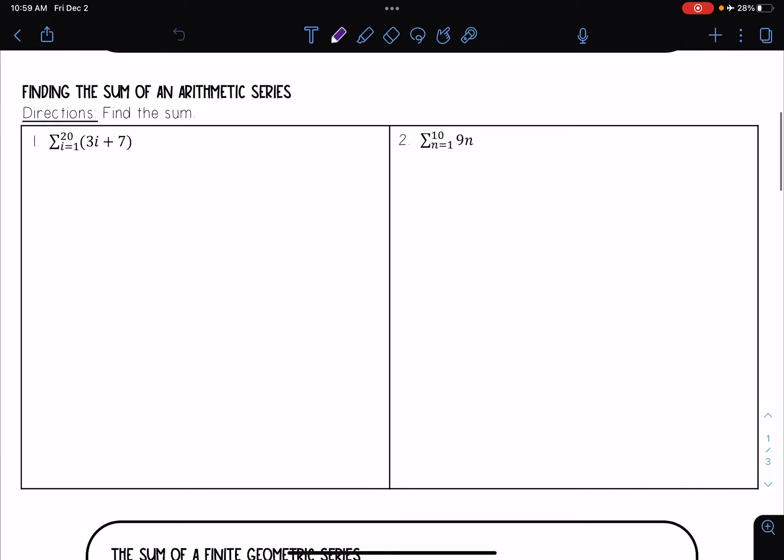So let's go ahead and practice this. For this first one I have the sum i equals 1 to 20 of 3i plus 7. The rule again here is that Sn is equal to n times a1 plus an over 2.